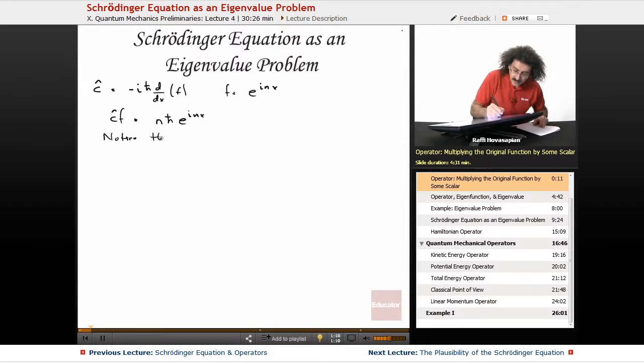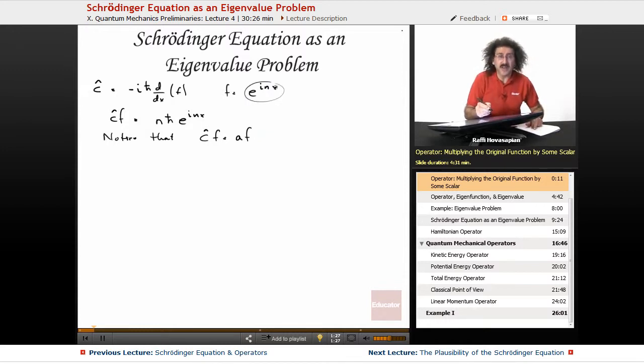Notice that operating on f is the same as multiplying it by... The original function was e to the inx. The operated on function was nh times e to the inx. We ended up just multiplying the original function by some scalar, by some number, positive or negative. It actually doesn't matter. So this is the general arrangement: operating on f equals some scalar times f.